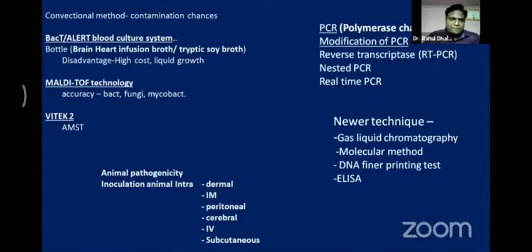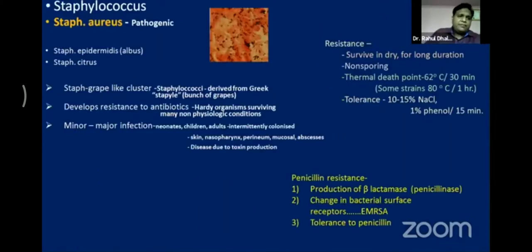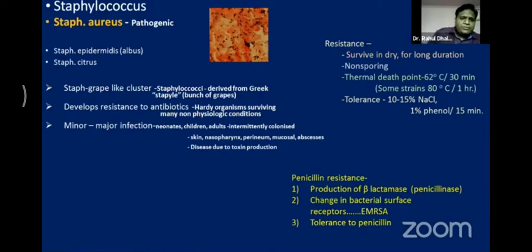Now we'll turn to bacteriology. First, staphylococcus — there are three main species: Staphylococcus aureus, epidermidis, and citrus, but the main pathogenic one is aureus, which gives golden yellow pigmentation after growth on nutrient agar. Staphylococcus means cocci in a cluster, resembling a bunch of grapes — cocci in a circular cluster is known as staphylococcus.